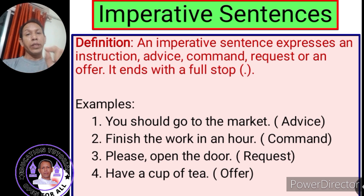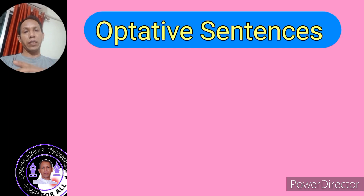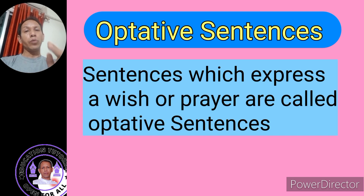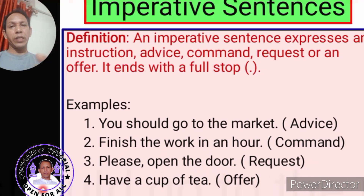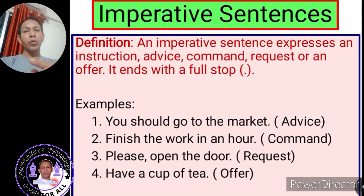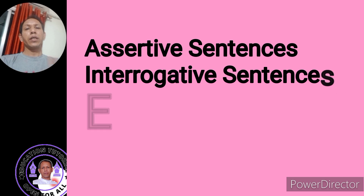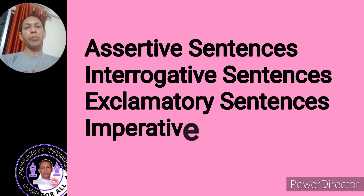I told you there is one more kind of sentence. Some grammar books include a fifth type of sentence — the optative sentence. Optative sentences express a wish or a prayer. But in most books, sentences which express a wish or a prayer are included among the imperative sentences. Therefore, in most books we find there are four kinds of sentences: assertive, interrogative, exclamatory, and imperative sentences.